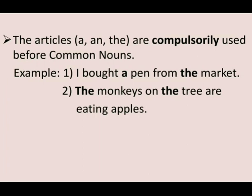The second point is that articles such as A, An, or The should be compulsorily written before a common noun. For example: 'I bought a pen from the market' — pen and market are common nouns, so article A is written before pen and The before market. In the second sentence, 'The monkeys on the tree are eating apples' — monkeys is a common noun, so The is written before monkeys; and tree is also a common noun, so The is written before tree also.